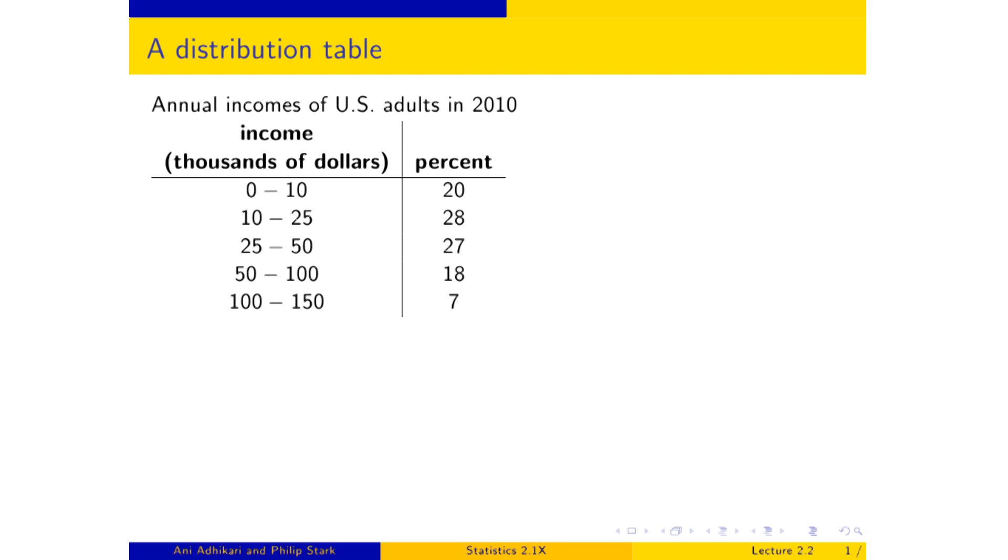And so here somebody has done that. Income is measured in thousands of dollars. This is annual incomes, so this group made between $25,000 and $50,000, and 27% of the population was in this group. That's how you read that table. And here you can see, even by just looking at the table, that about three quarters, actually exactly three quarters, had incomes in between nothing and $50,000, and one quarter had incomes higher than $50,000.